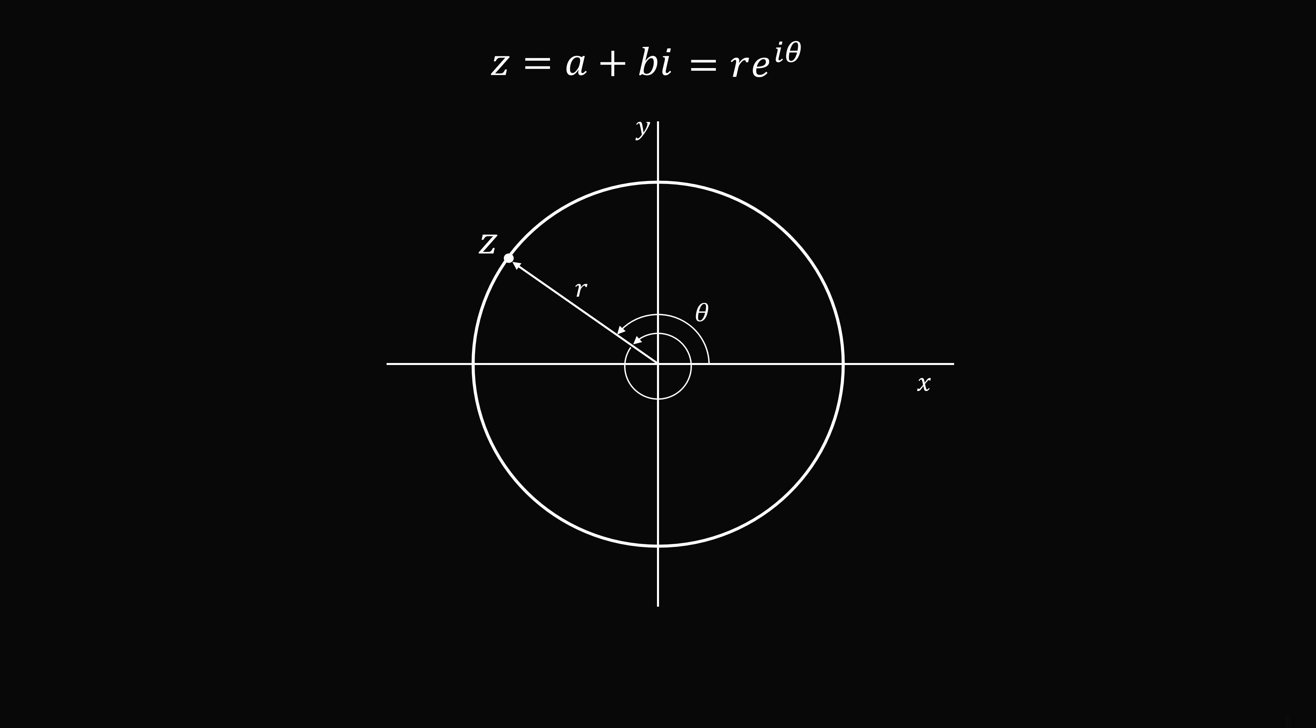Now, of course, you could add any multiple of 2 pi, you'll still get the same angle. So we could also write this as r multiplied by e to the power of i, multiplied by the angle theta plus 2 pi k, where k is an integer.